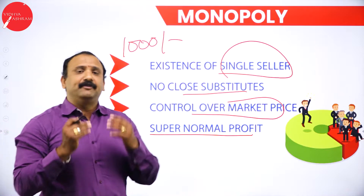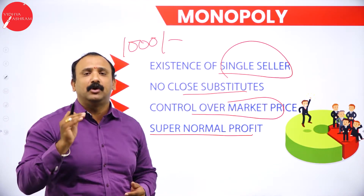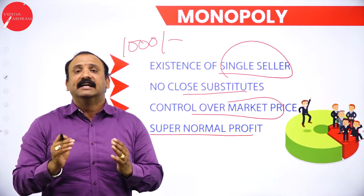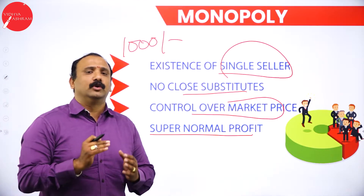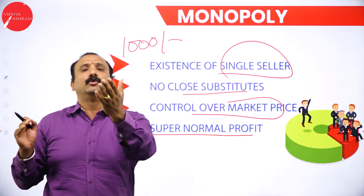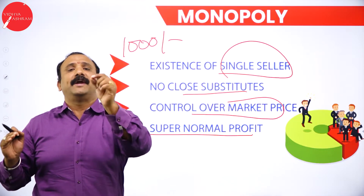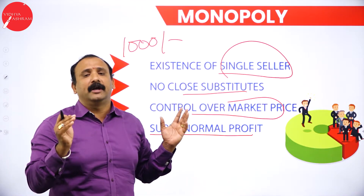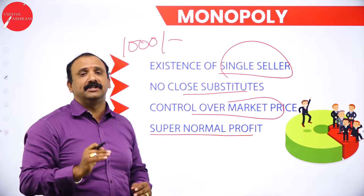Super normal profit is something way above normal profit. In monopoly, because you are the single seller, all customers in the market — say one lakh customers — must come to you. You reap all the benefits of selling to every consumer. Whatever money paid by the consumer goes straight into the pocket of the seller. Your return on investment is absolutely fantastic — that is what monopoly promises in the long run.